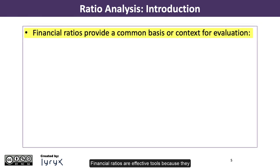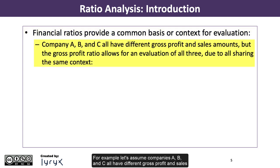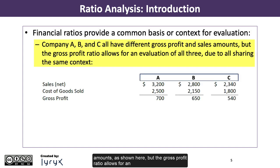Financial ratios are effective tools because they provide a common basis or context for evaluation. For example, let's assume companies A, B, and C all have different gross profit and sales amounts, as shown here, but the gross profit ratio allows for an evaluation of all three, due to all sharing the same context.